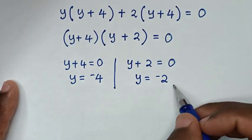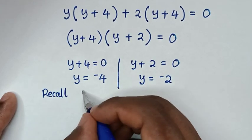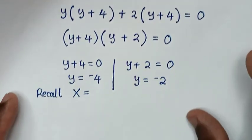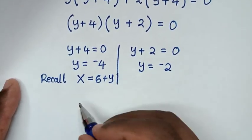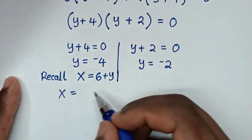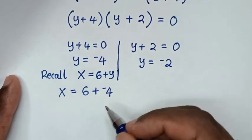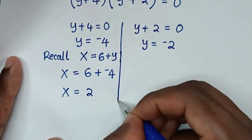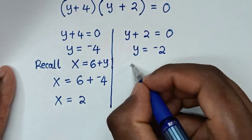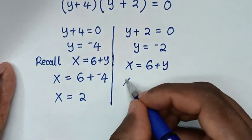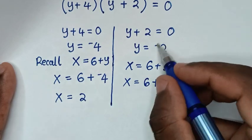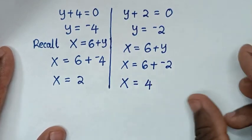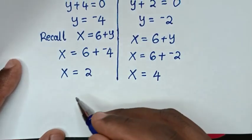We have only the values of y, so we recall equation 3: x is equal to 6 plus y. For the first solution, x equals 6 plus (negative 4), so x equals 6 minus 4, which is 2. For the second solution, x equals 6 plus (negative 2), so x equals 6 minus 2, which is 4.